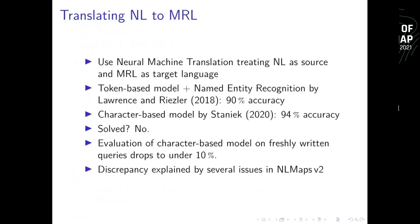This was already done by Lorenz and Rietzler in 2018 — they used a token-based model with a separate NER model and reached 90% accuracy. Michael Staniak later improved this to 94% accuracy with a character-based model. These are very high accuracy numbers — 94% of queries were parsed into exactly the right MRL query. So is this solved? No, because unfortunately accuracy drops very sharply on new queries, explained by several issues in NLMaps version 2.